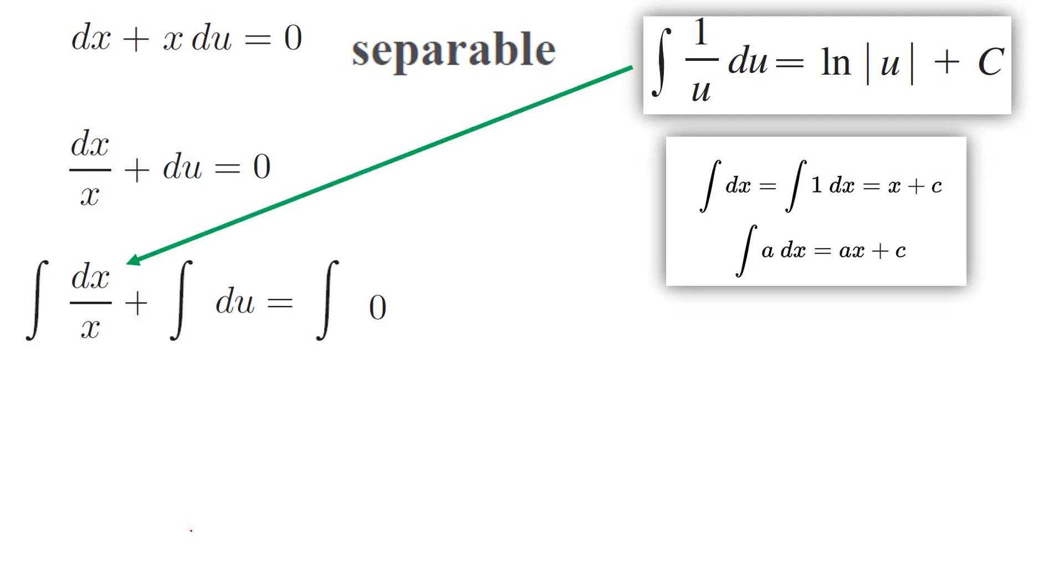So as you can see, you end up with ln|x| for the integral of dx/x. The second integral, the integral of du, is basically u. And on the other side, you have the integral of 0, which equals c. That's why you end up with just the coefficient c.